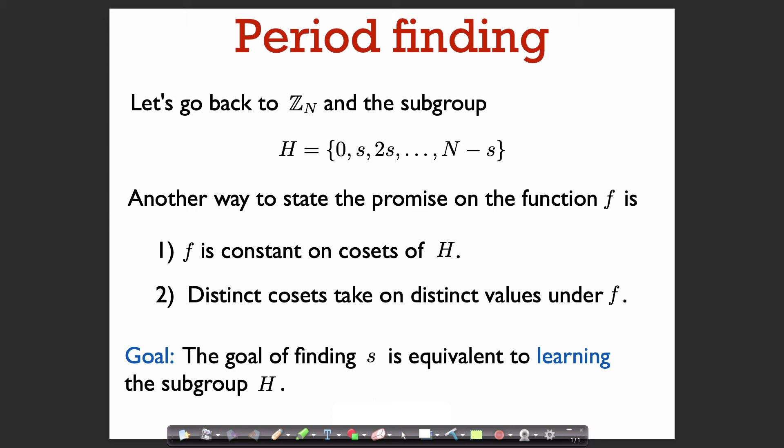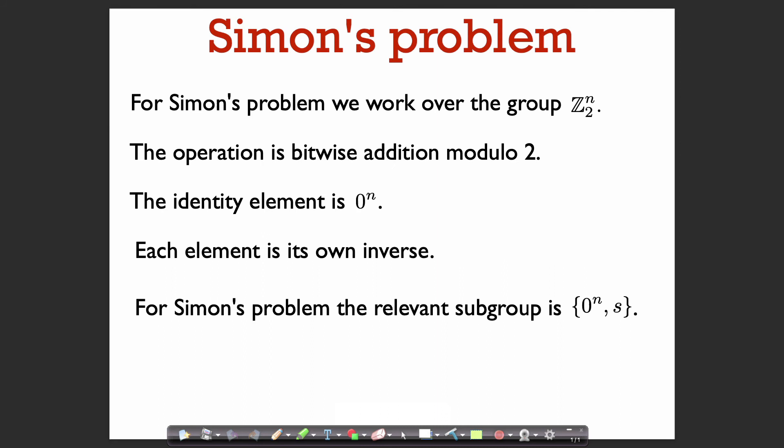Our goal in the simple period-finding problem is to learn s. You can see that s generates the subgroup H — so once we know s, we know the subgroup, and if we know the subgroup H, we know s. The goal of finding s is really equivalent to learning the subgroup H, meaning learning a generating set for H, since s in this case does generate H itself.